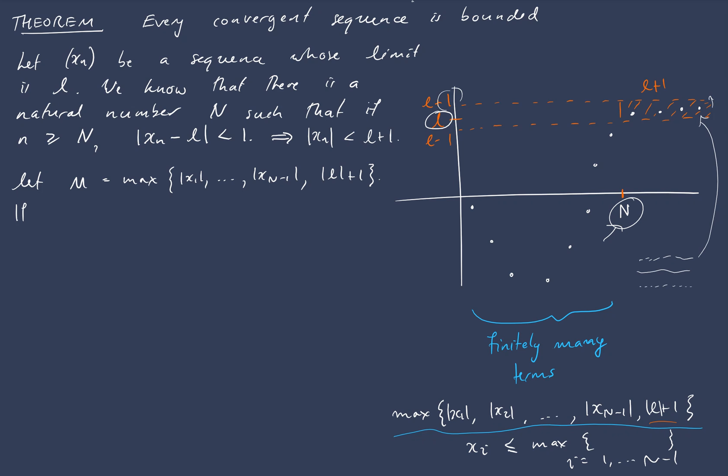It follows that the absolute value of Xn is less than or equal to M for all N in the natural numbers. And thus the sequence Xn is bounded.